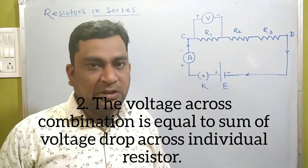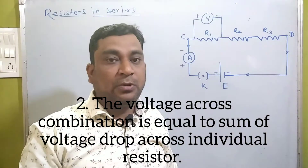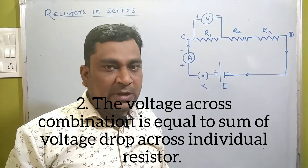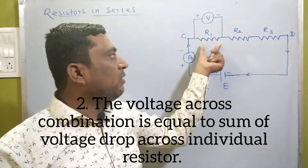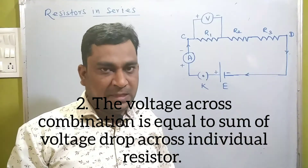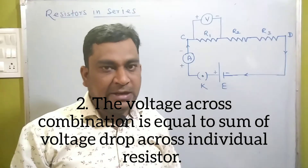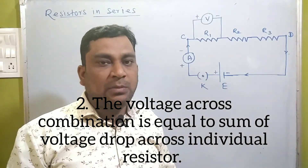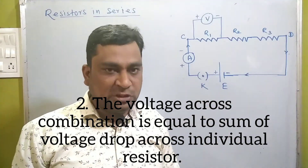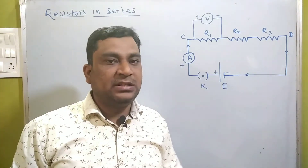The second characteristic: in a series combination, the total potential difference across the combination — for example between points C and D — is equal to the sum of the potential drops across each resistor. So to find the total potential difference V, you add all the individual potential differences dropped across each resistor. In summary: current is the same, voltage is different across each resistor.